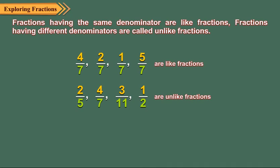Fractions having the same denominator are like fractions. Fractions having different denominators are called unlike fractions. Four upon seven, two upon seven, one upon seven and five upon seven are like fractions because each one has the same denominator, seven. Two upon five, four upon seven, three upon eleven and one upon two are unlike fractions because these have different denominators.